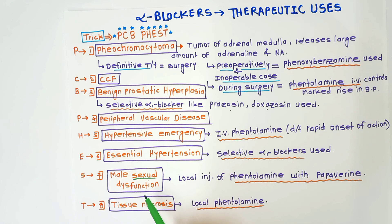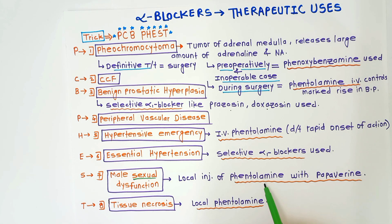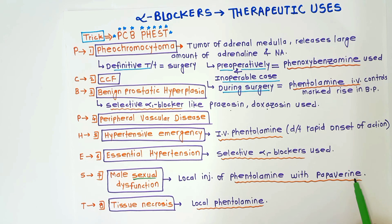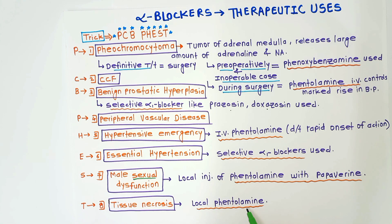S for male sexual dysfunction — local injection of phentolamine with papaverine is used. T for tissue necrosis — local phentolamine is useful. Thank you; if you like this video, please subscribe to my channel.